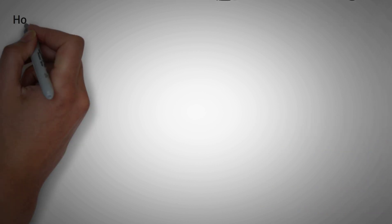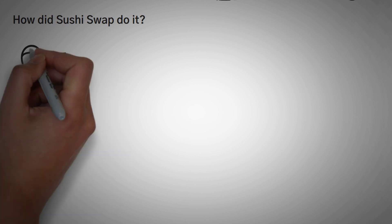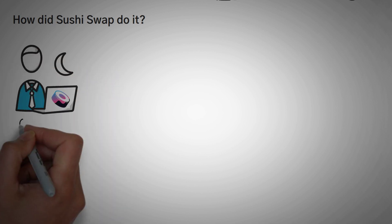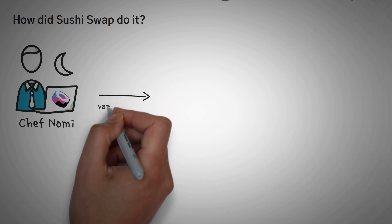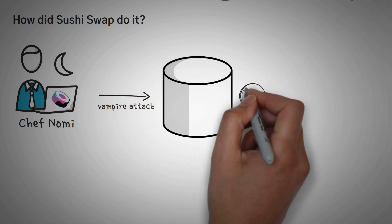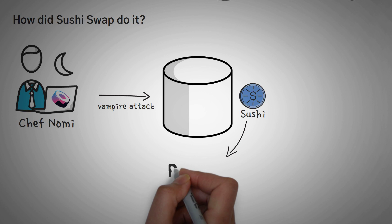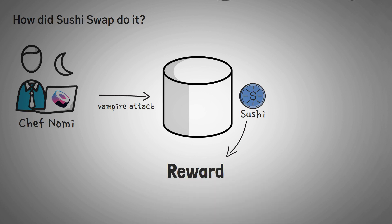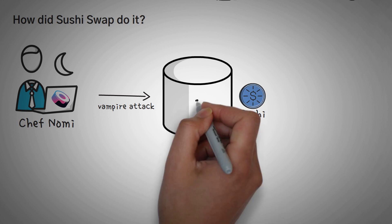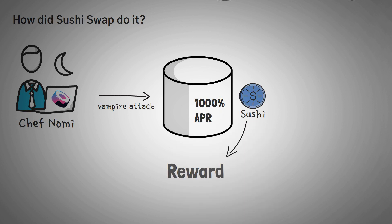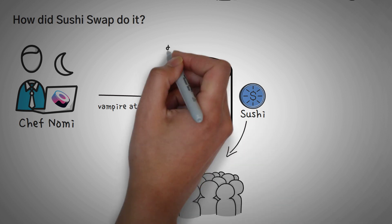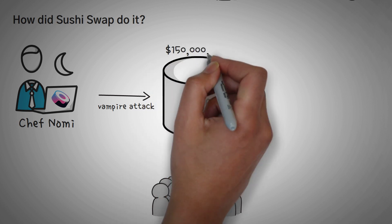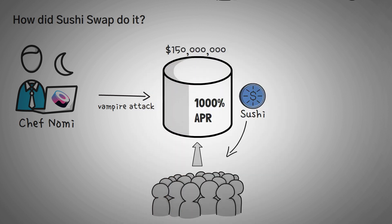So how did SushiSwap do it? SushiSwap was created by an anonymous person who dubbed himself Chef Nomi. He simply created a vampire attack by offering the native SUSHI token as a reward for liquidity providers — he just offered better rates. In fact, at the beginning these rates were up to 1,000% APR. Within only a few hours of their launch, they reached over $150 million of value in tokens invested on their platform.